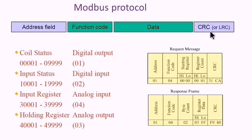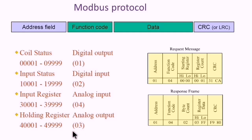If the CRC does not match, it will indicate an error in transmission. Here we have the address range of Modbus registers with function codes: 01 read coil status, 02 read input status, 04 read input registers, and 03 read holding registers.